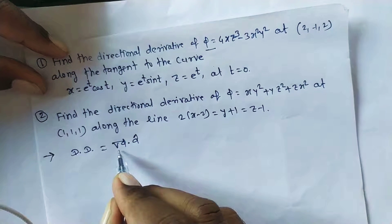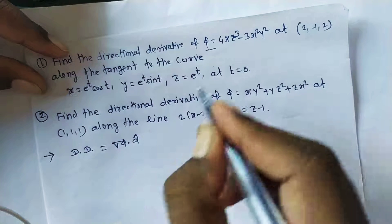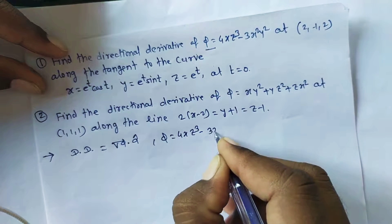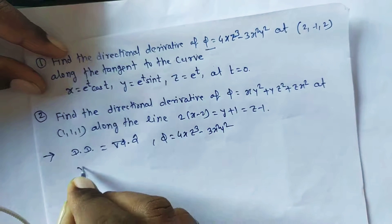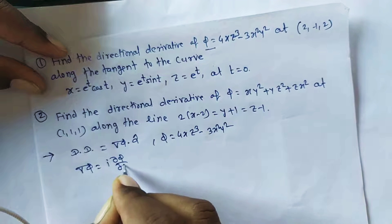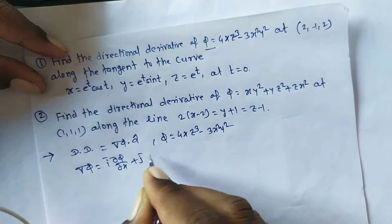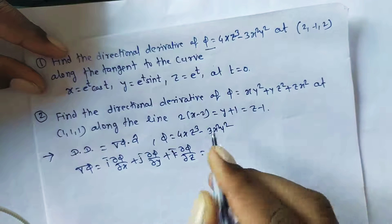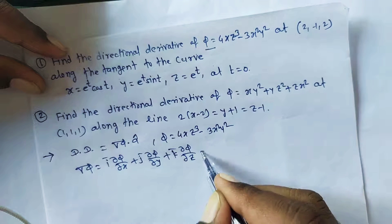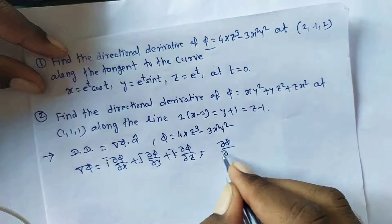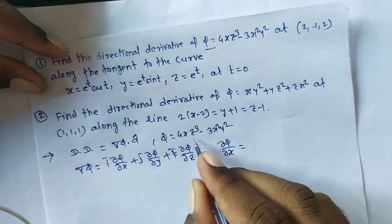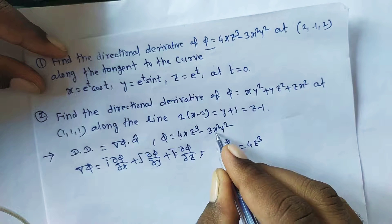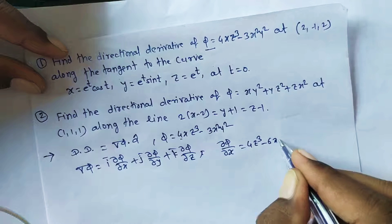For the directional derivative we need ∇φ at point (x, y, z). Here φ = 4xz³ − 3x²y². Taking the partial derivative with respect to x, y and z are constant, so ∂φ/∂x = 4z³ − 6xy².